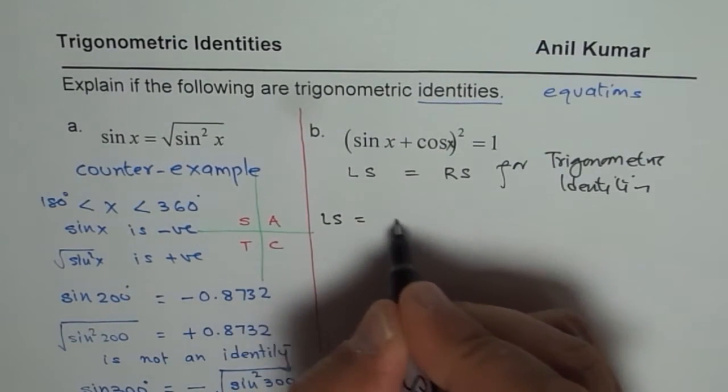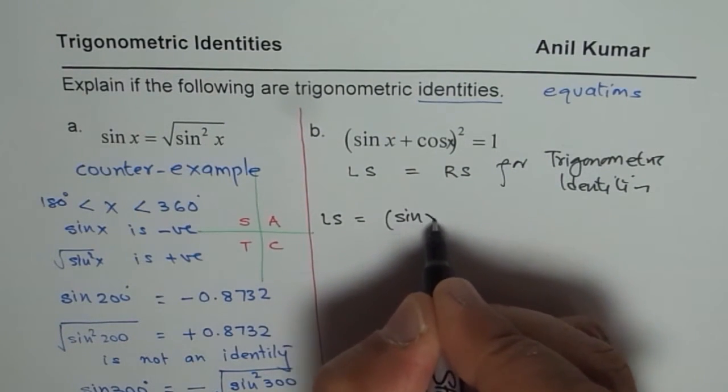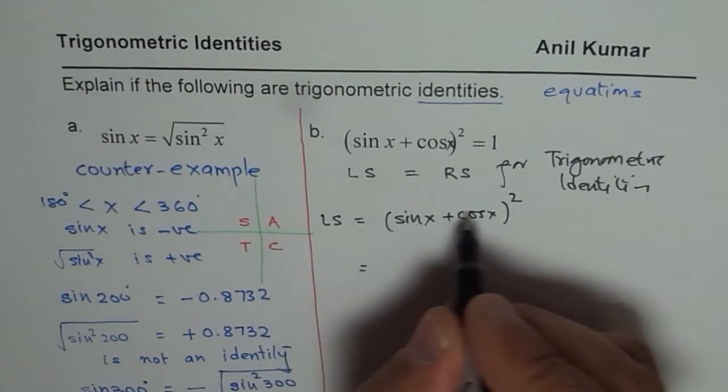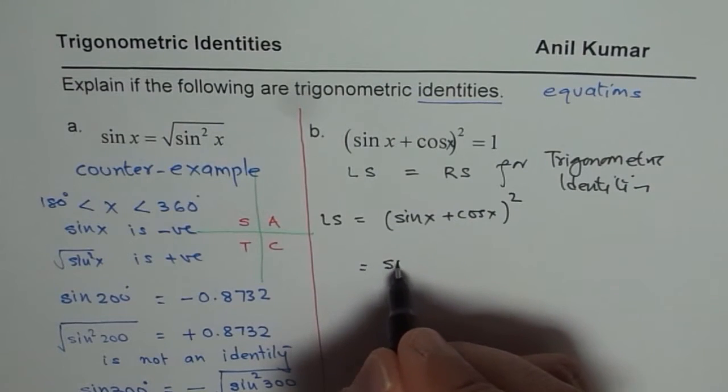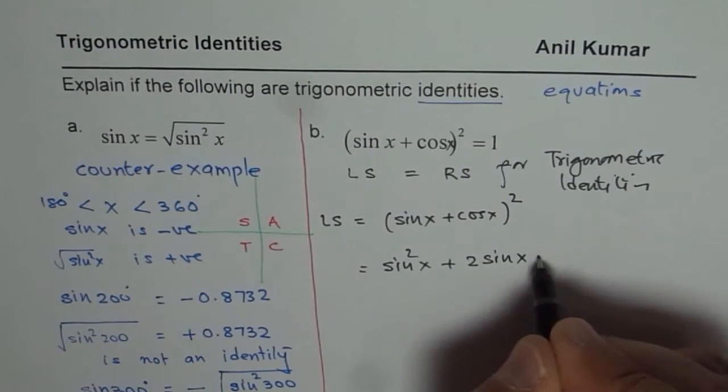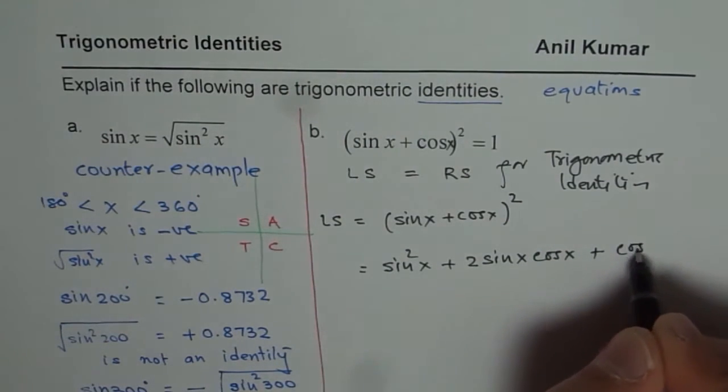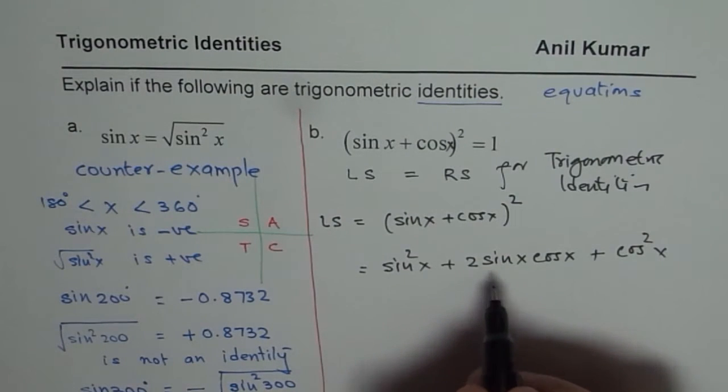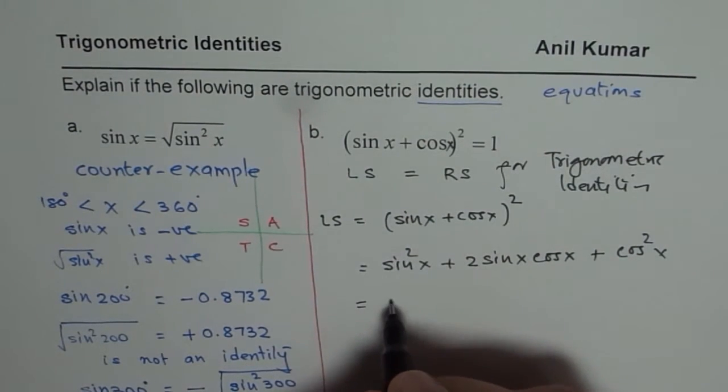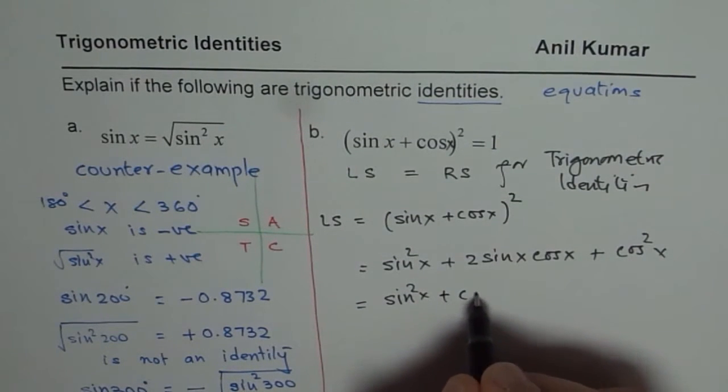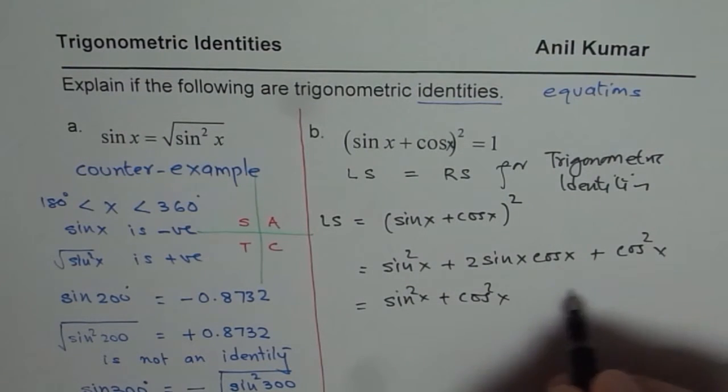Let us begin with the left side. We have left side as sin x plus cos x whole square. Let us expand it. We get sin square x plus 2 sin x cos x plus cos square x. Remember that a plus b whole square is a square plus 2ab plus b square. Now, we can combine sin square x and cos square x. We will rearrange this. We have 2 sin x cos x.